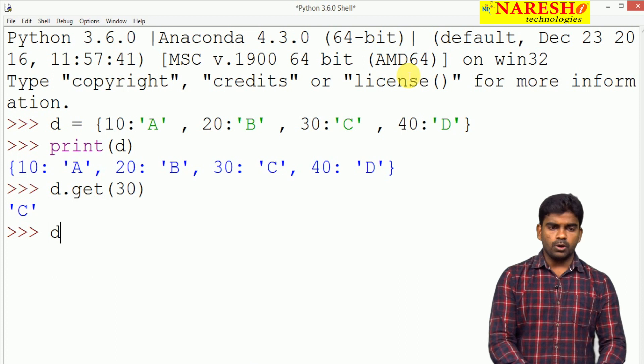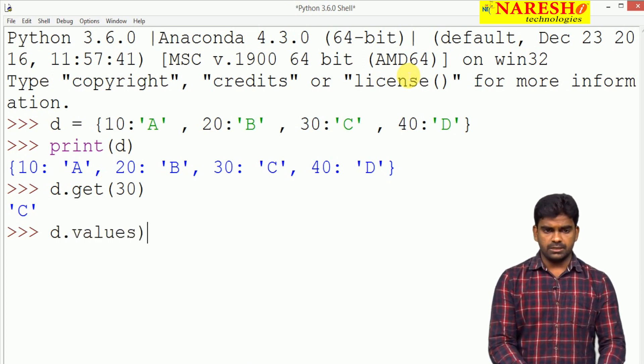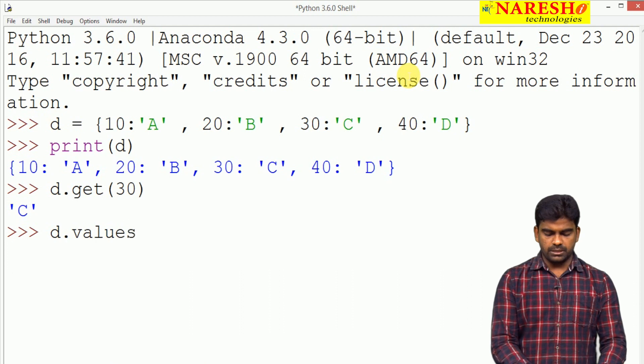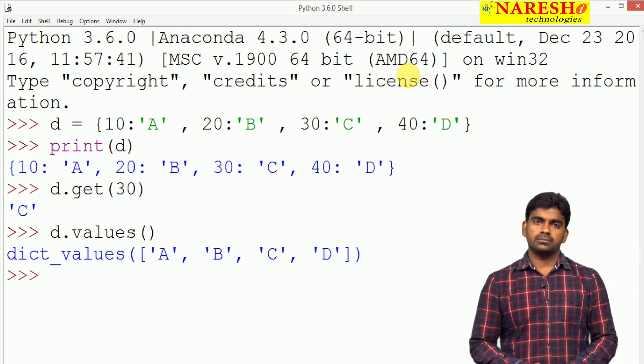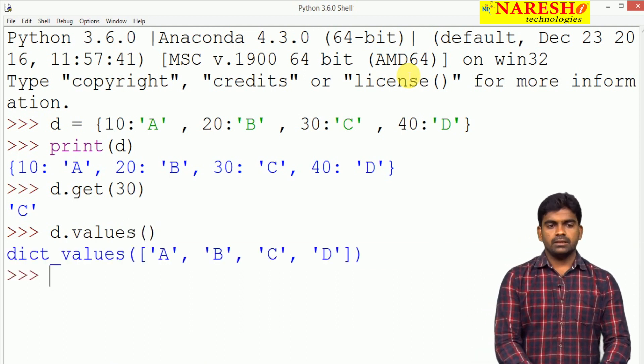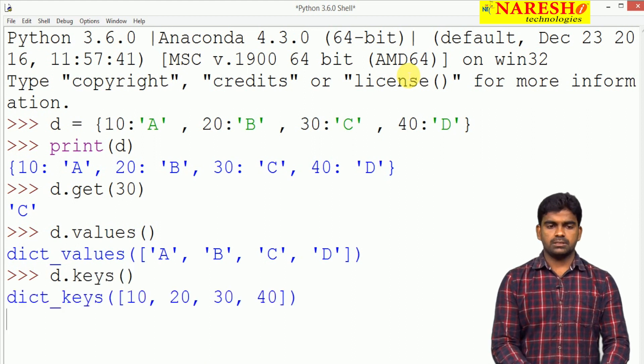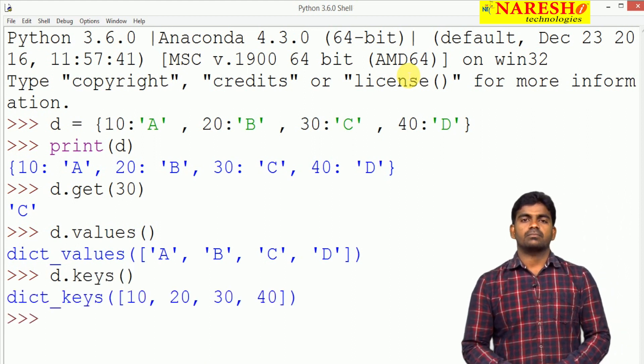I just want to display all values. Just d dot values function is there, it will give a list of values. Next I want to display all the keys, a list of keys available.